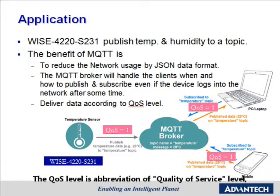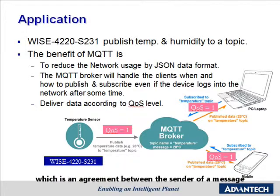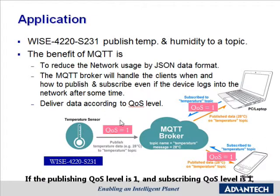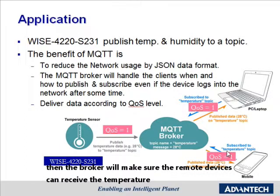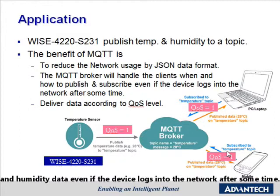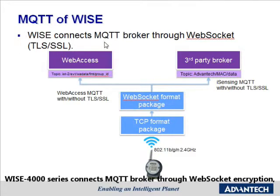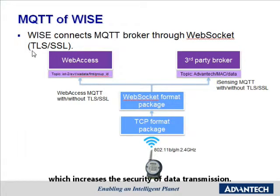The QoS level is an abbreviation of Quality of Service level, which is an agreement between a sender and a receiver that defines the guarantee of delivery for a specific message. If the publishing QoS level is 1 and the subscribing QoS level is 1, the broker will ensure the remote devices receive the temperature and humidity data, even if the devices log into the network after some time. WISE 4000 series connects to the MQTT broker through WebSocket encryption, which increases the security of data transmission.